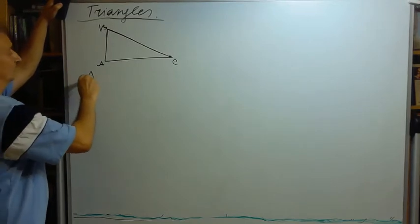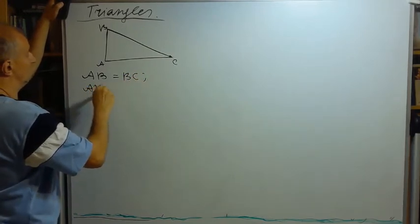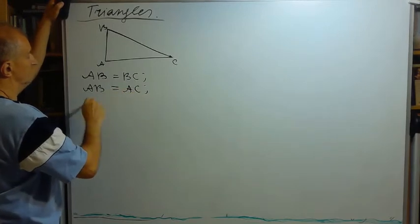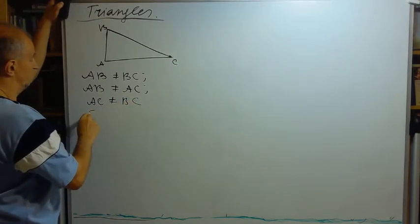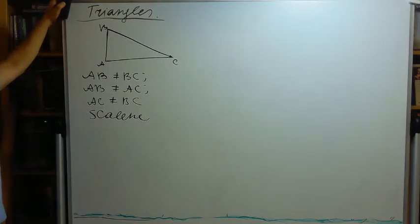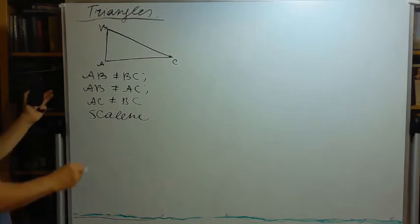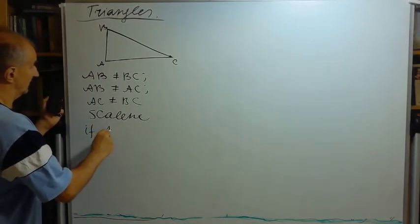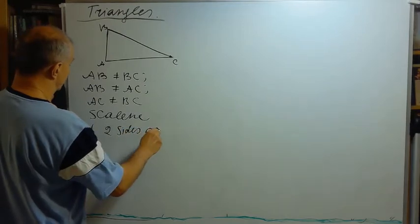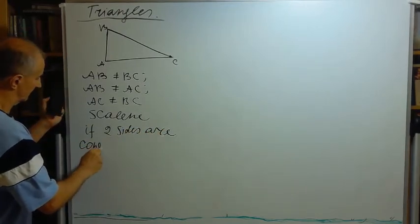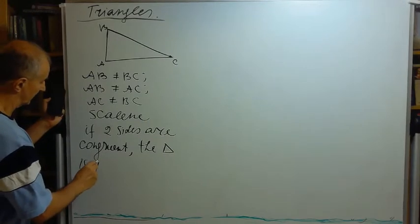If AB is not equal to BC, and AB not equal to AC, and AC is not equal to BC, this triangle is scalene. So it's the most general thing, this is a generic triangle, not a special kind of triangle. If two sides are congruent, the triangle is called isosceles.